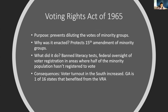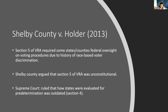The Voting Rights Act of 1965 is a very significant bill that helped protect the 15th Amendment rights of minority groups to vote. Once enacted, it banned literacy tests and gave federal oversight on voter registration in some states. The effect was that voter turnout increased in the South, where minority votes were often underrepresented. There were 16 states that had to have federal oversight, and Georgia was one of them.